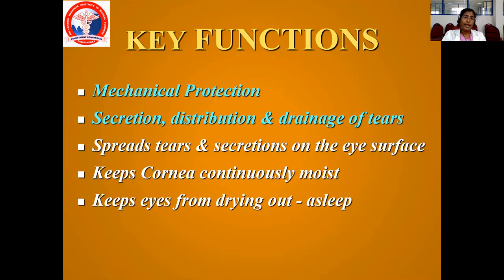Each time the lid blinks and spreads the tear film, it keeps the cornea continuously moist. If the cornea is not kept moist — that is if the lids are open — it will go for dryness. That is happening in lagophthalmos, that is in facial palsy. The lids cannot close properly, and hence the tear film is not properly distributed over the cornea, causing the eyes and cornea to become dry. Once it becomes dry, corneal abrasions and infection follow. That is the importance of blinking and spreading the tear film over the eyes.